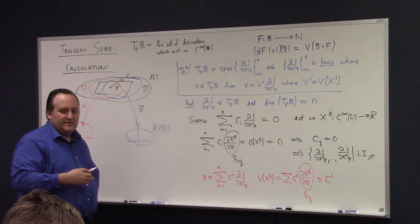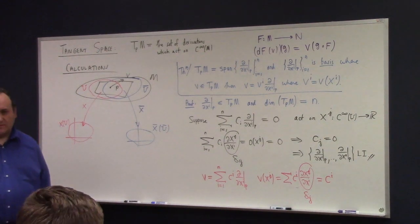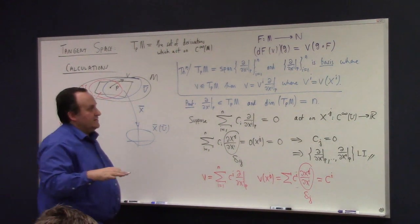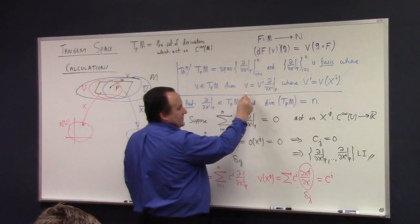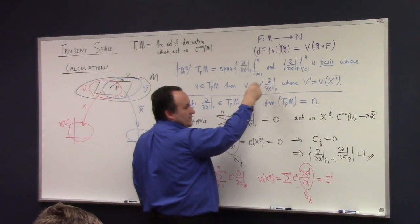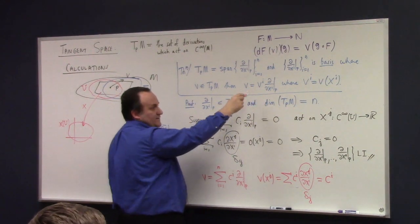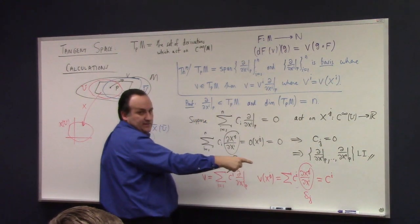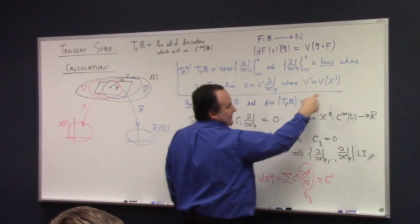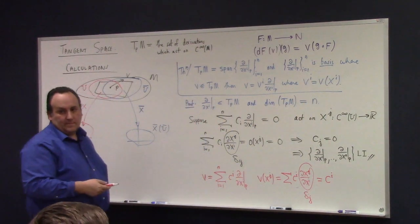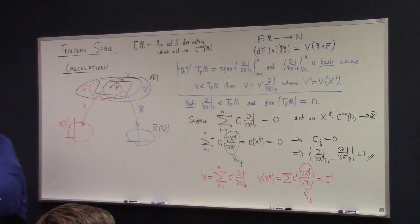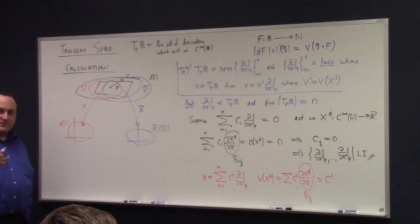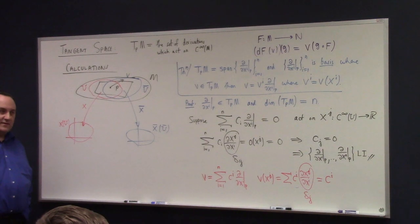I really should have written v^i to start with. If the vector is v^i summed over ∂/∂x^i, then the component c^i equals v acting on x^i. To calculate the components of a vector with respect to the derivation basis, you just act the vector on the coordinate functions of the basis. Simple as that.